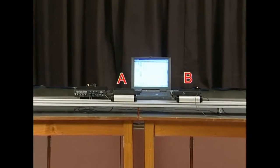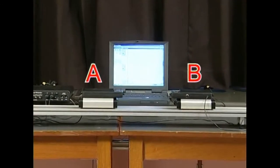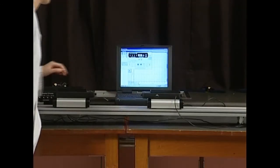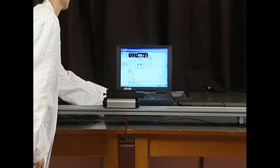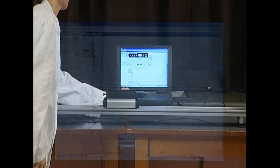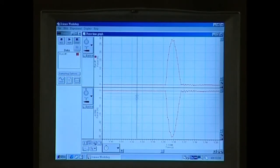Place two force sensors on trolley A and B. Start data logging. Give a sharp push to trolley A so that it collides with the stationary trolley B. Note and save the force-time graphs obtained.